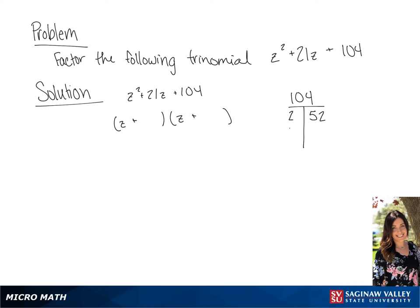So we have 2 and 52, then 4 and 26, which is too much. And then we have 8 and 13, which if we add 8 and 13 together will equal 21. So we're going to put 8 in the first binomial and 13 in the second one, giving us z plus 8 times z plus 13.